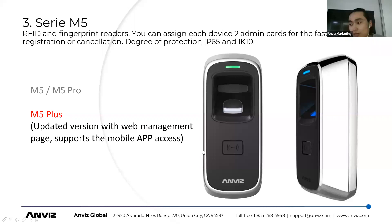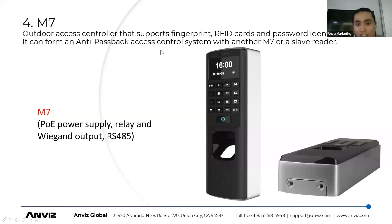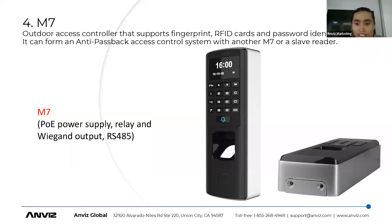The M7 series has only one device, the M7, and as we can see here it supports password, fingerprint, and card identification. You can say it's a combination of M3 and M5. This model can also be used as an anti-passback access control system — you can connect it with another device to form an active anti-passback system to prevent someone from entering without identification. This model also supports PoE power supply, meaning you can use just one Ethernet cable to provide both power and network communication.